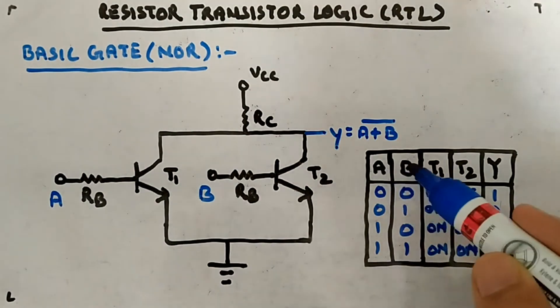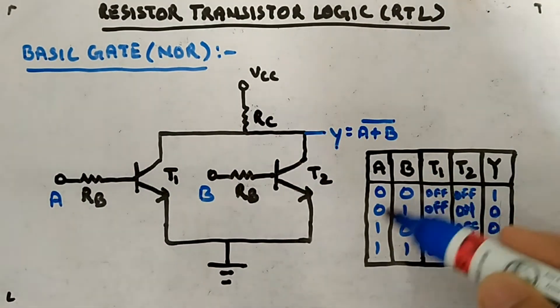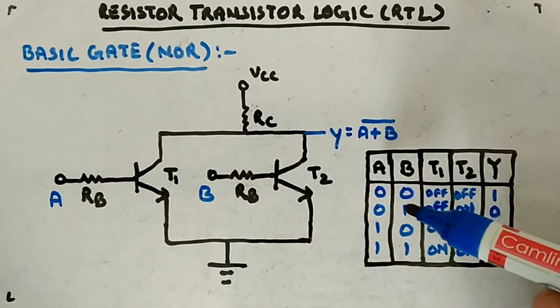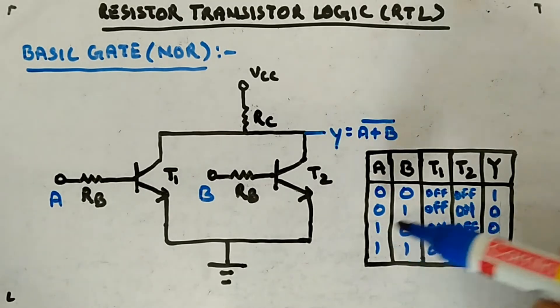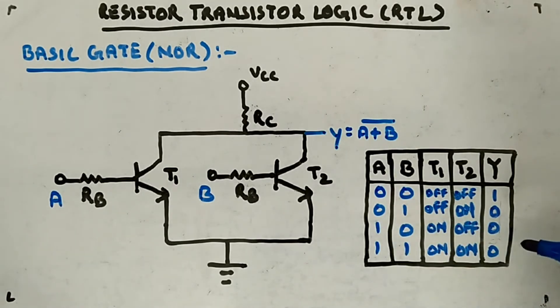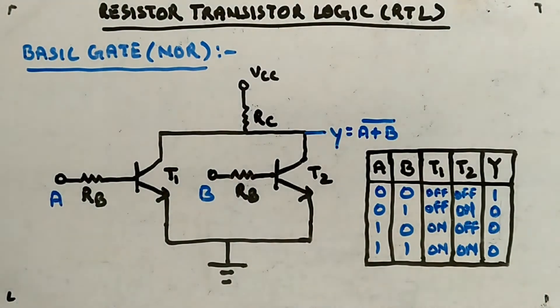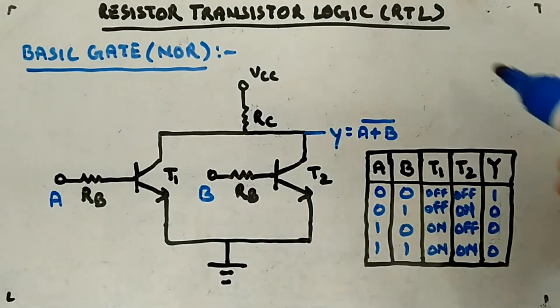You can see this is our expression. These guys are inputs A and B, Y is your output. You can see it's an expression of a NOR gate. Why? Because if both of them are zero, then only output is high. If any one of them is high, the output is low. This is the NOR gate in resistor transistor logic.